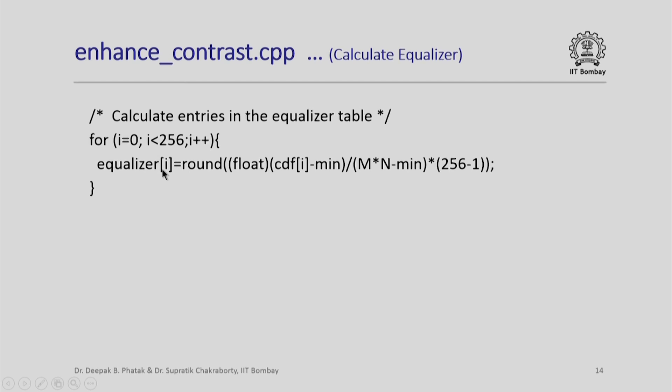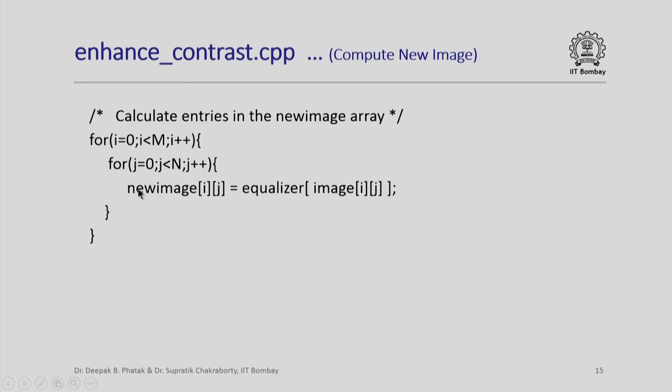So what does equalizer[i] contain now? If a pixel value in the original image is i, then equalizer[i] will give me the new image value. I again use the associative property of the equalizer array itself to calculate values of my new image. I run a scan for 0 to M-1, 0 to N-1. I look at every original image value (i,j)th element, use that as an index in the equalizer array to calculate the (i,j)th element of the new image. Notice again how beautifully simple the computations are. In a single scan of image array, I convert every element into a new image array.